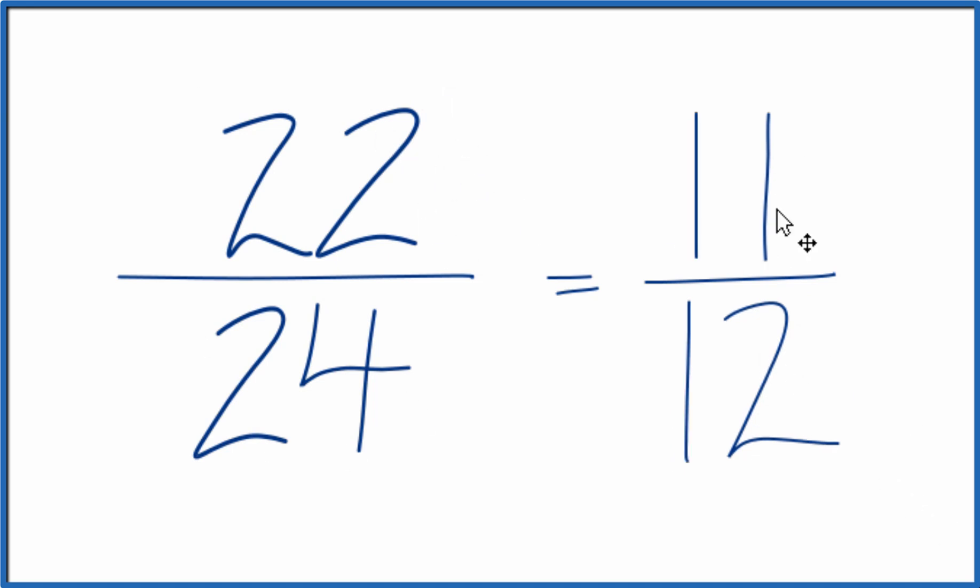These fractions are equivalent. 22 divided by 24 or 11 by 12 gives you the same decimal answer. It's just that this is represented in simplest terms.